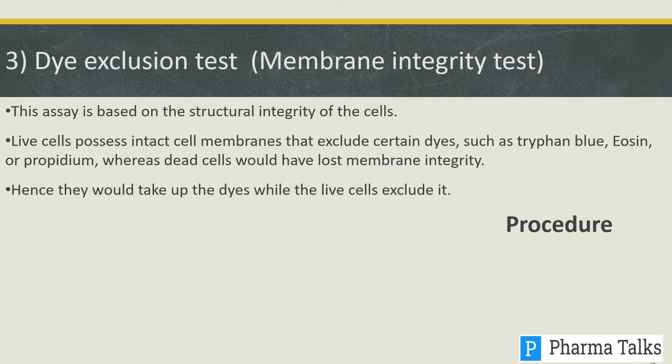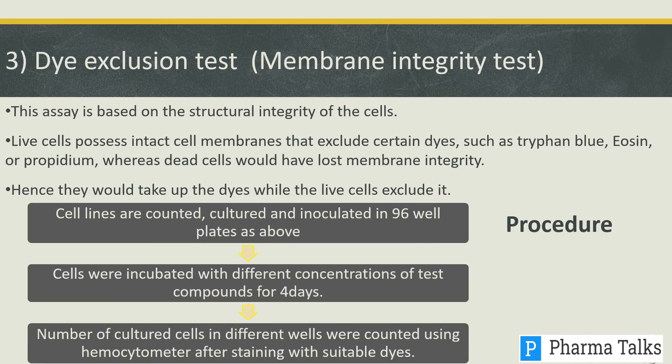The dye exclusion assay is based on the structural integrity of cells. Live cells possess intact cell membranes that exclude certain dyes such as trypan blue and eosin, whereas dead cells have lost membrane integrity and take up the dyes. Cell lines are counted, cultured, and inoculated in a 96-well plate. Cells are incubated with different concentrations of test compounds for 4 days, and the number of cells in different wells is counted using a hemocytometer to evaluate percent cell viability.